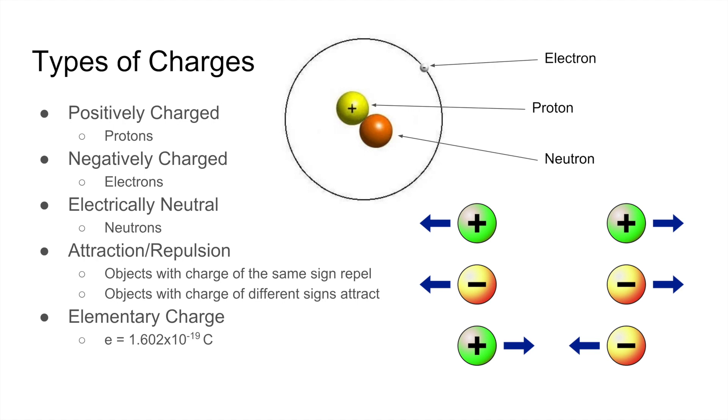Objects with the same sign of charge repel each other. So, for example, positive charges repel each other, and negative charges repel each other. Meanwhile, objects with charge of different signs will attract each other, such as positive with negative charges.